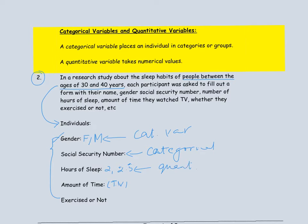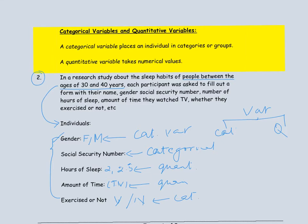The amount of time watching TV is again a measurement of time, so that would again be a quantitative variable. When the next question is whether they exercise or not, the answer could be yes or no. So that is not a quantity; it is not a measurement, so this would be a categorical variable. In short, there are two types of variables: categorical and quantitative. A variable is called a quantitative variable if it is a measurement. It is called a categorical variable if it is non-quantitative.